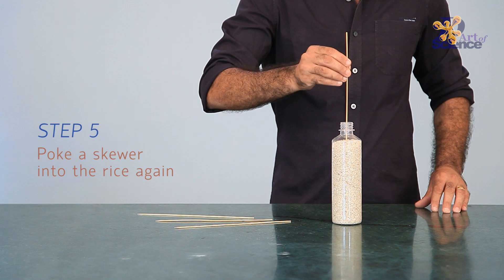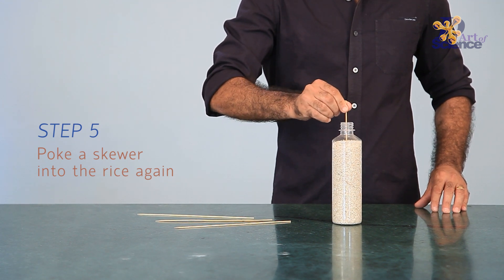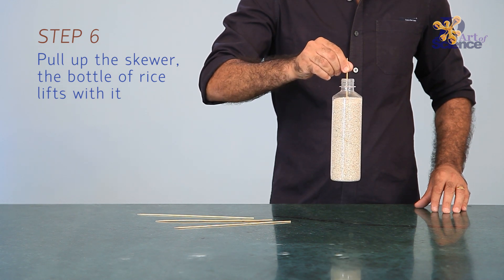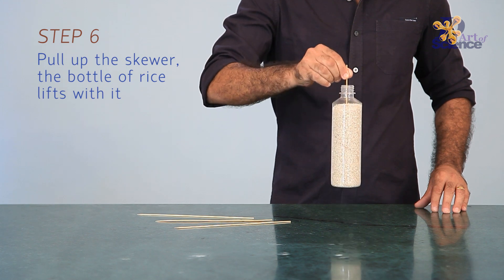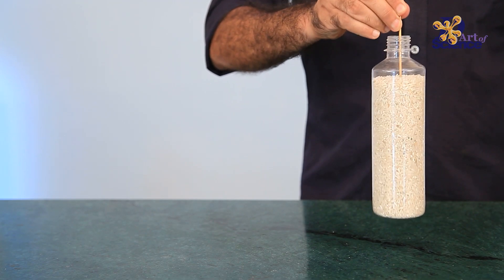Now when the skewer is forced inside, it experiences a lot of friction because of these tightly packed rice grains. This frictional force is strong enough to hold the skewer in place, allowing us to lift the entire bottle with the skewer.